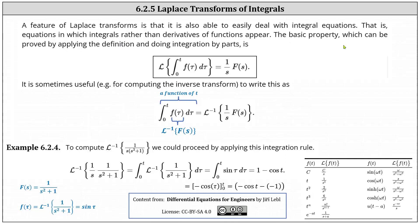The basic property, which can be proved by applying the definition of the Laplace transform and doing integration by parts, is the Laplace transform of the integral from zero to t of f(τ) dτ equals one divided by s times F(s).